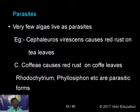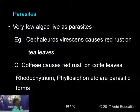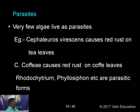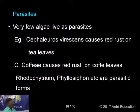Although algae are generally autotrophic, a very few species are parasitic. Cephaleuros virescens causes red rust disease on tea leaves, swallowing chloroplasts and producing a red powder on the leaves. Cephaleuros coffeae causes red rust on coffee leaves. Other parasitic forms include Rhodochytrium and Phyllosiphon, which also cause diseases on plants.